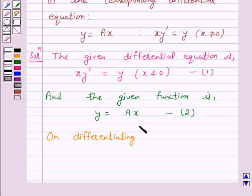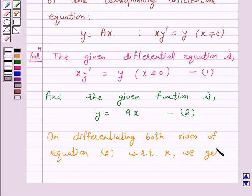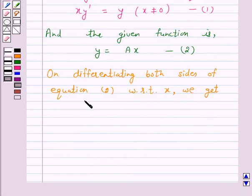both sides of equation 2 with respect to x we get dy by dx is equal to or y dash is equal to a.